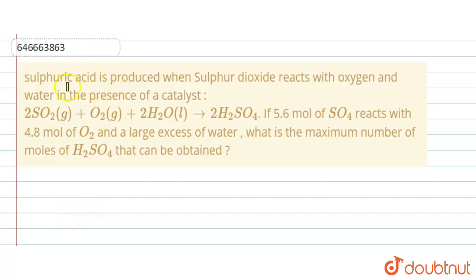So here the question is that sulfuric acid is produced when sulfur dioxide reacts with oxygen and water in the presence of a catalyst. So here we are given with the reaction. If 5.6 moles of SO2